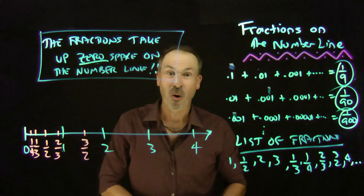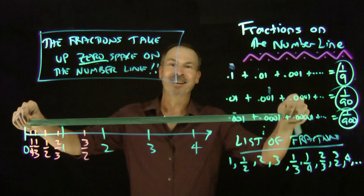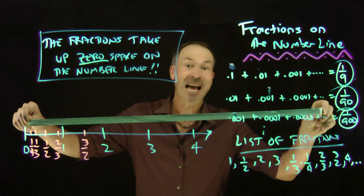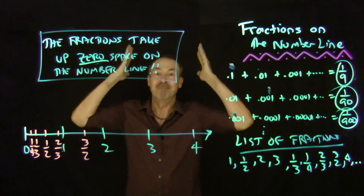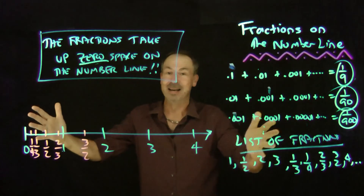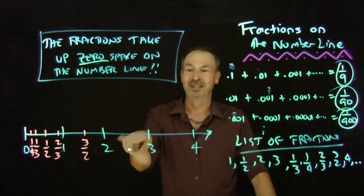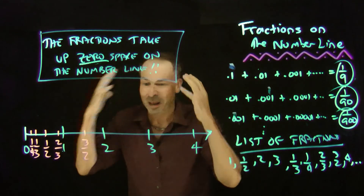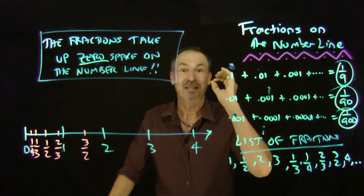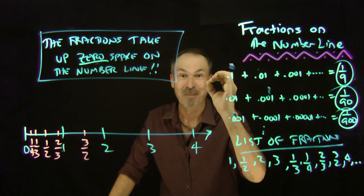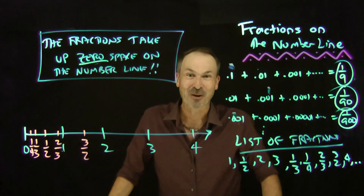The fractions take up zero space on the number line — which is amazing, because there's an infinite amount of space on the number line, and the fractions are taking up none of it. This means most numbers on the number line are not fractions. We humans love fractions and whole numbers — we do all our thinking in them — yet that takes up zero percent of the number line. That's either delightful or disturbing. I'm not sure which.